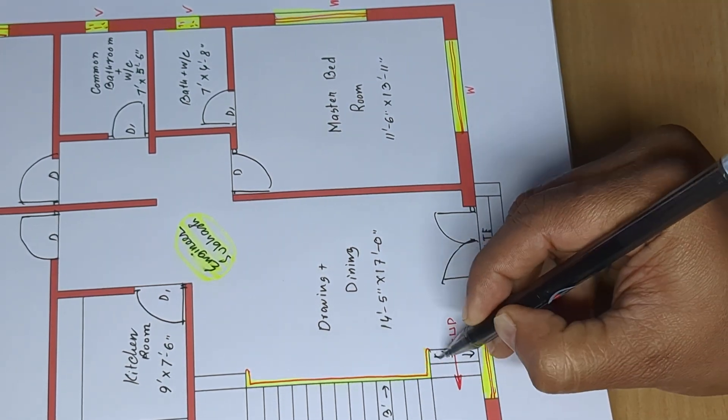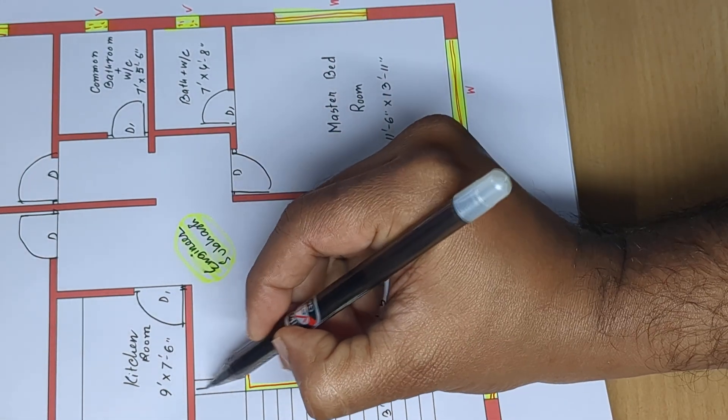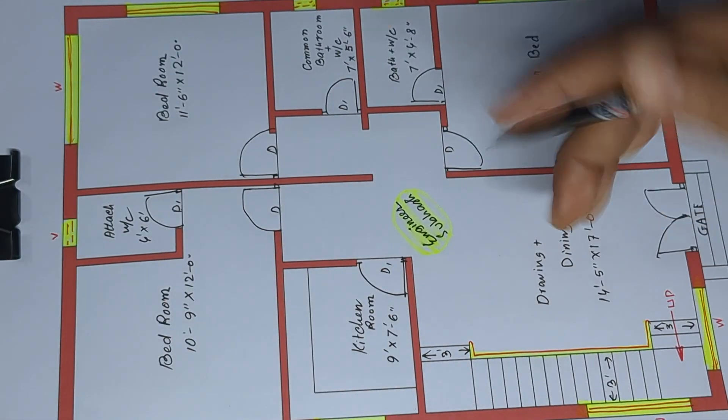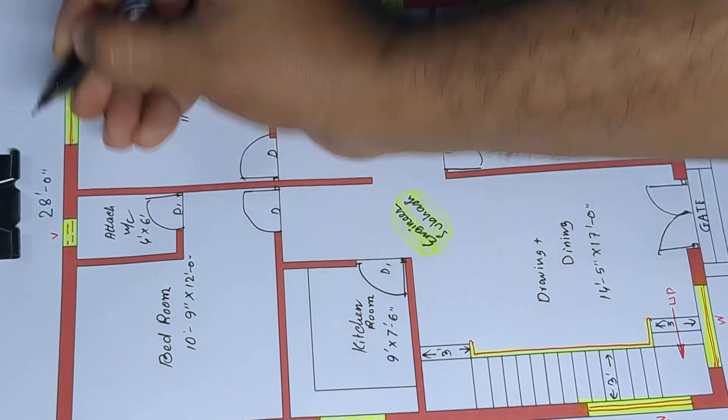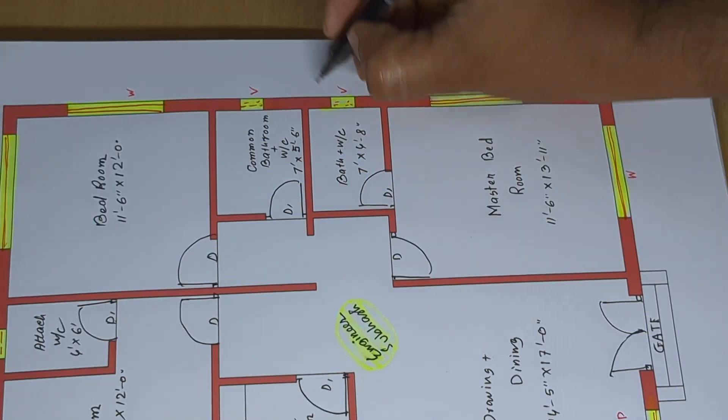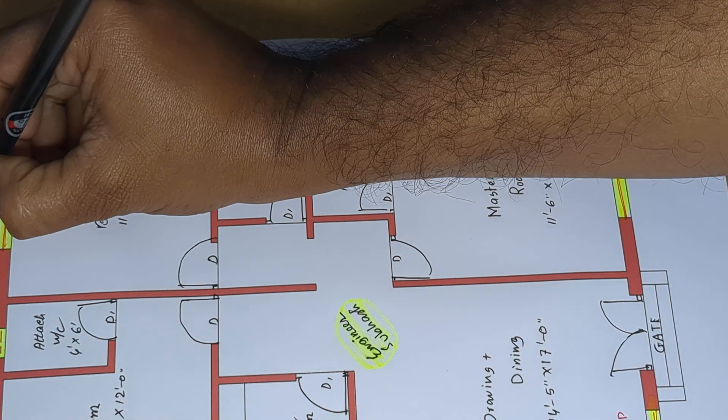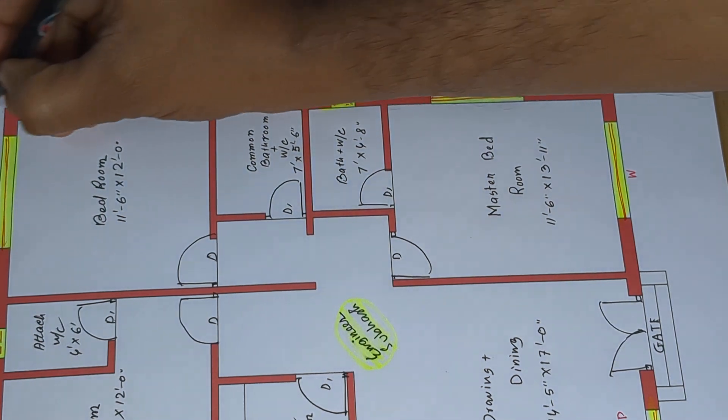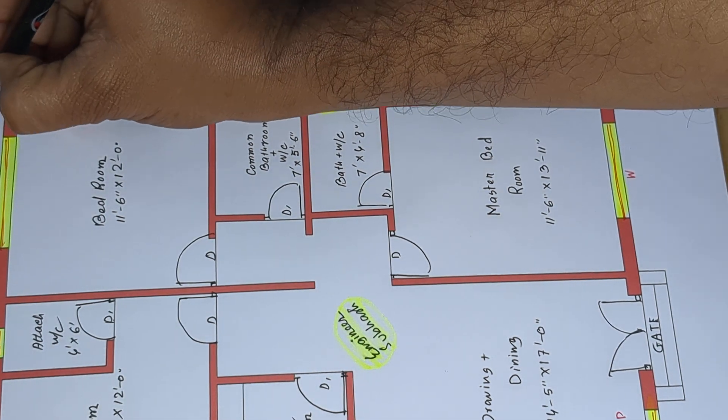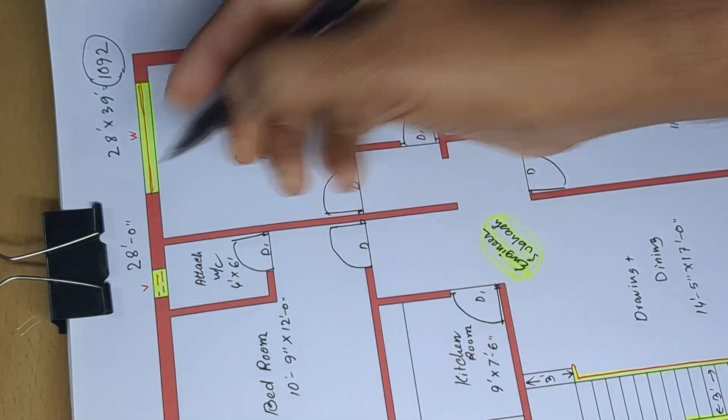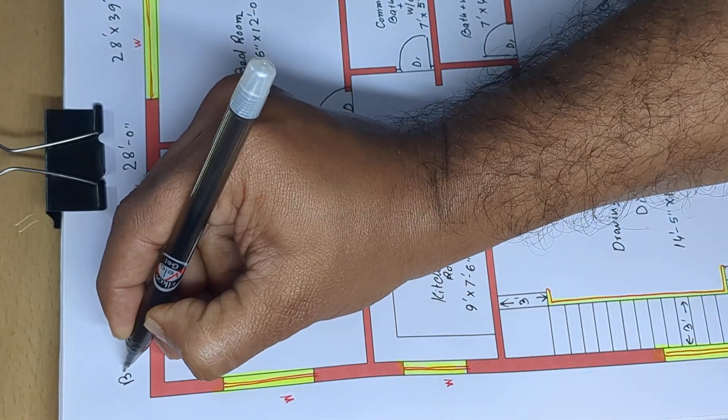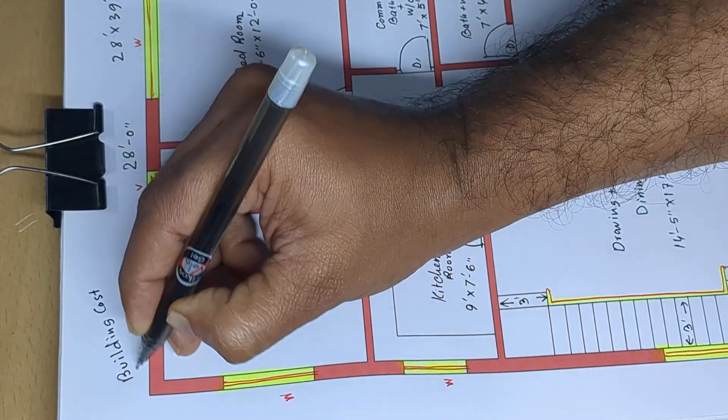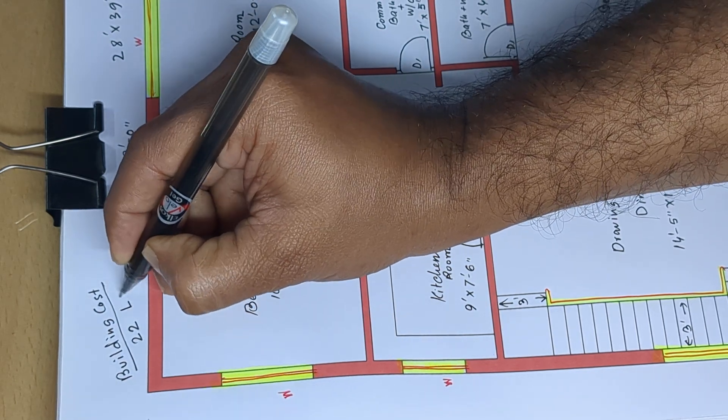3 feet, 3 feet 8 inches white, 3 feet, and red, white 3 feet, simple design. 28 feet 0 inches by 39 feet 0 inches. 28 into 39, total square feet 1,092. 40 feet 6 inches. Building cost 22 lakhs, 22 lakhs.